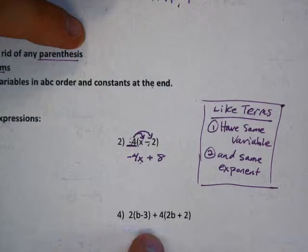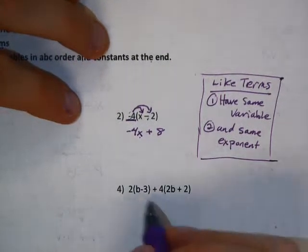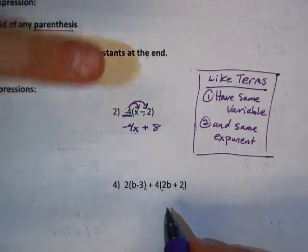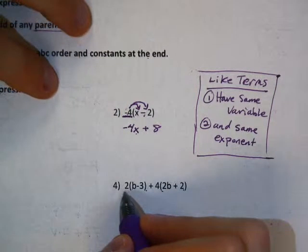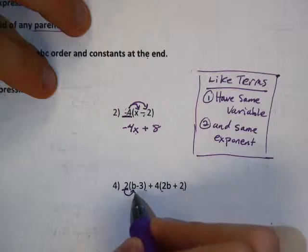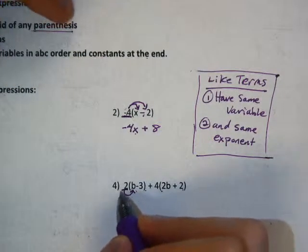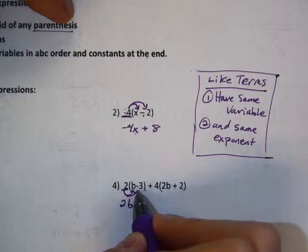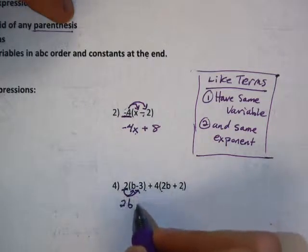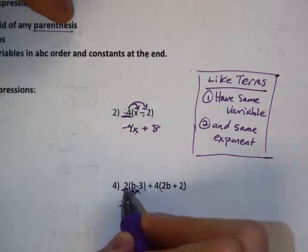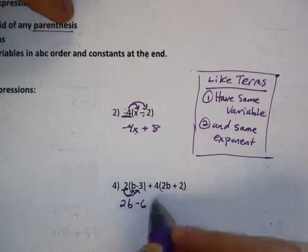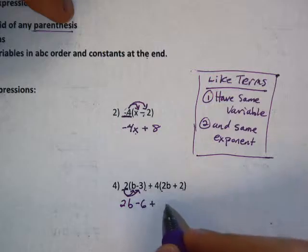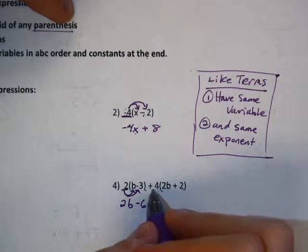Like terms have same variable and same exponential power, or same exponent if you will. So they're going to have the same variable and the same exponential power. You need both of these in order for it to qualify as a like term. And we'll see that in this example here. Number 4. So number 4.